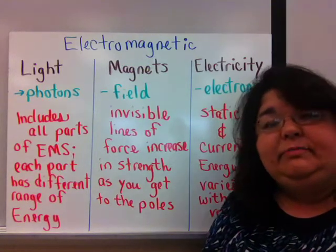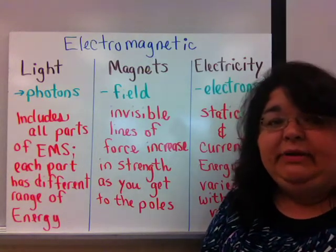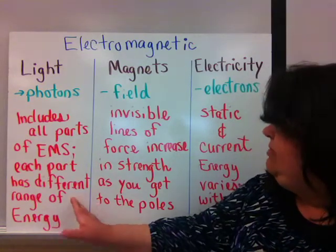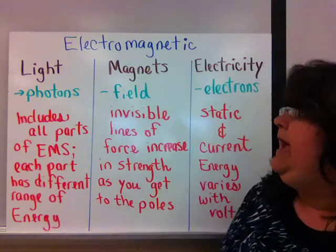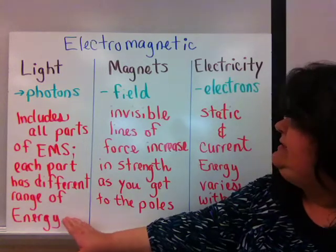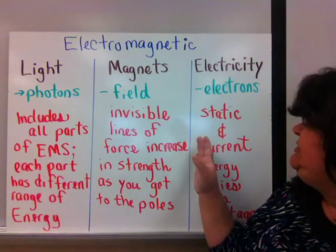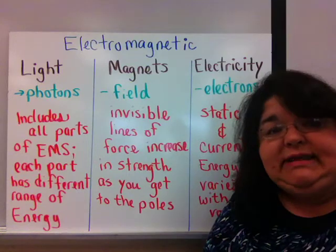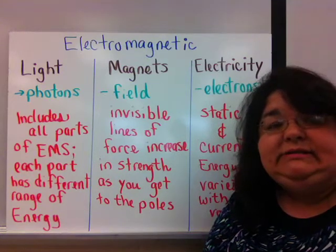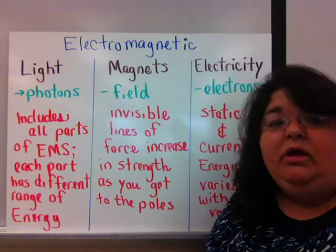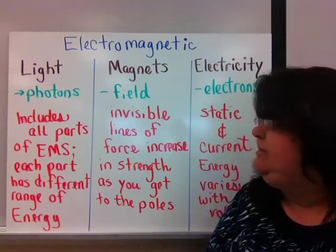Electromagnetic energy is a very important form of energy, and it can be broken down into three different categories. We have light, magnets, and electricity. Notice that sound is not listed here. Sound is actually classified as a mechanical form of energy, which we just talked about.